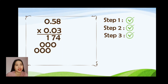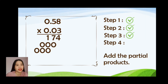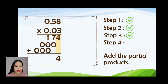After multiplying all the decimal numbers, we are now going to add the partial products. Make sure that they align according to their place values. So 4 will have an answer of 4. 7 plus 0 will have an answer of 7. Next is 1 plus 0 plus 0, the answer will be 1. Then 0 plus 0 is 0. And then 0.